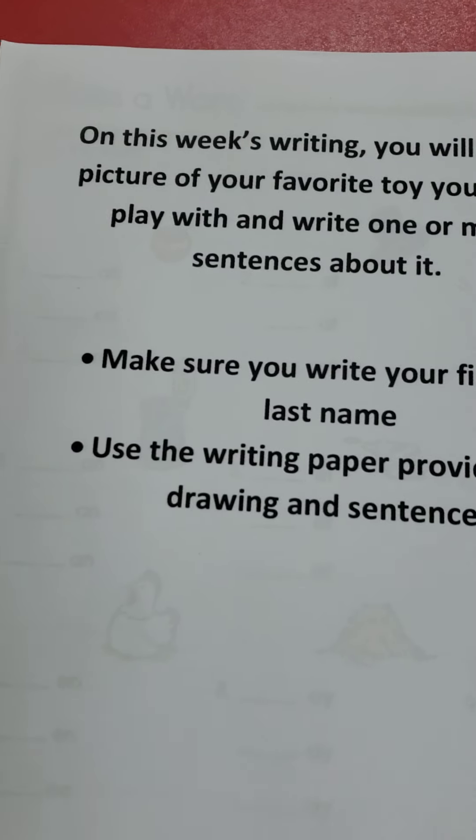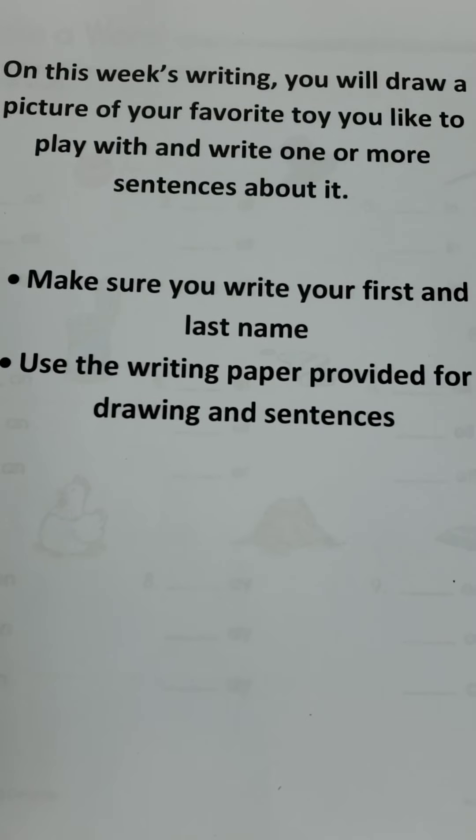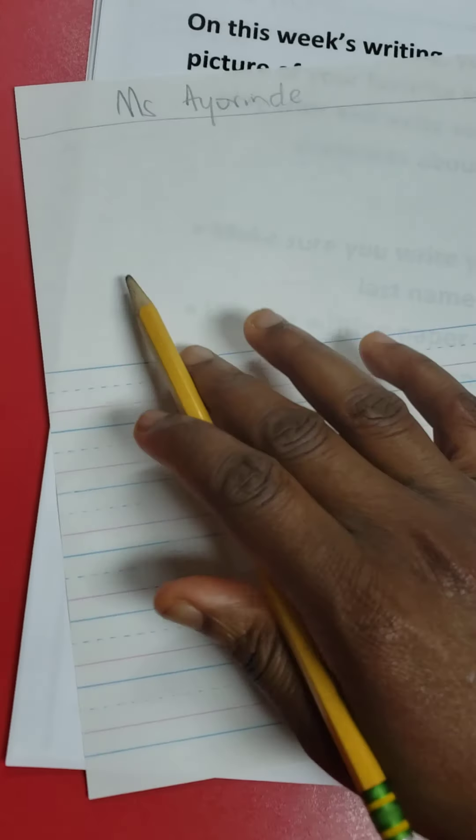Go along with me. On this week's writing, you will draw a picture of your favorite toy you like to play with and you're going to write one or more sentences about it. Make sure you write your first name and your last name and you use the writing paper provided. If you can write one sentence, that's fine. That's all you need to do for this page.